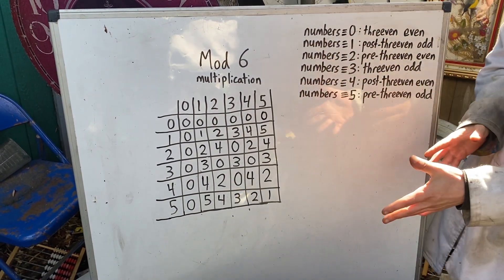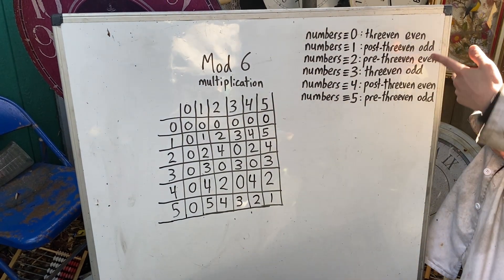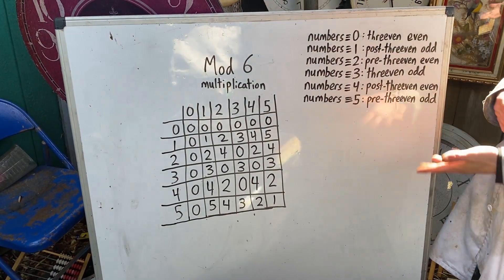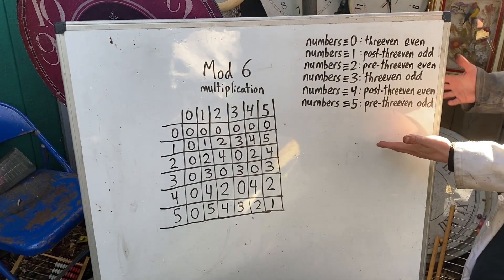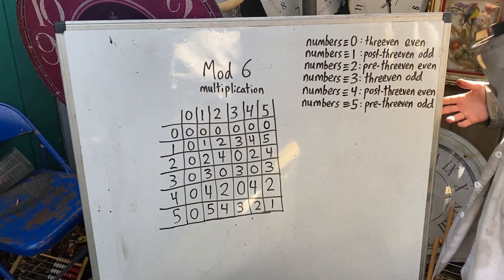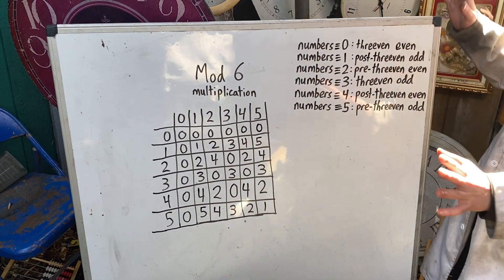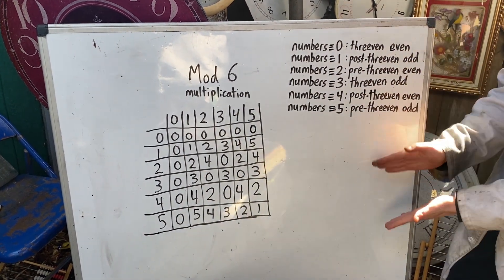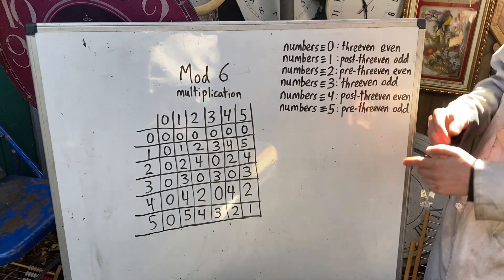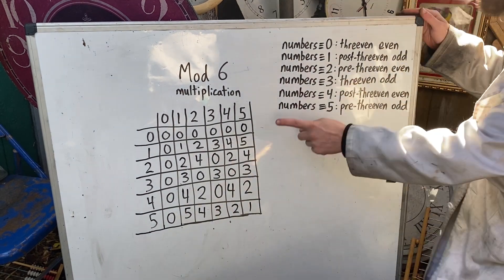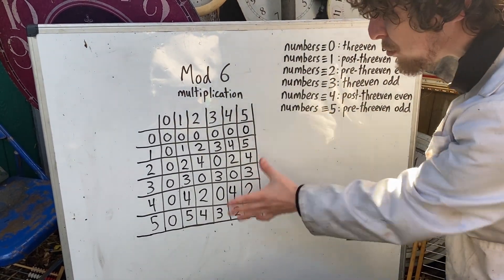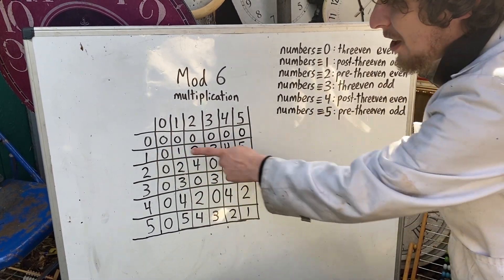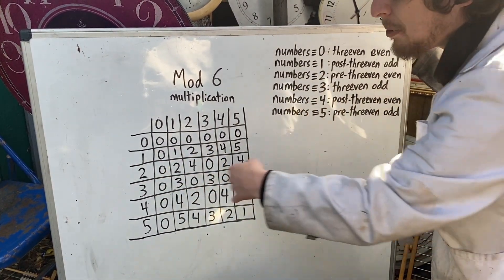This also lines up with all of our nicknames, where the ones are our post-threvan odds, twos are our pre-threvan evens, and so on. I love mod 6 or base 6 because we get one of each of these great combos before the cycle flips back around, and the multiplication table is pretty elegant and neat too — we got the numbers going up and then that pattern alternating, similar but flipped reverse.